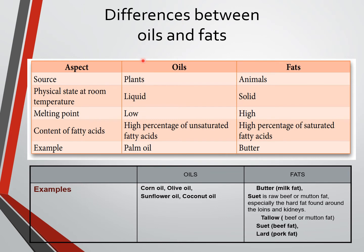The differences between oils and fats: oils come from plants while fats come from animals. At room temperature, oils are in liquid state while fats are in solid state. Oils have a lower melting point compared to fats. In oils, the percentage of unsaturated fatty acids (with double bonds) is higher, while in fats the percentage of saturated fatty acids (with no double bonds) is higher. Examples of oils are palm oil, corn oil, olive oil, sunflower oil, and coconut oil.